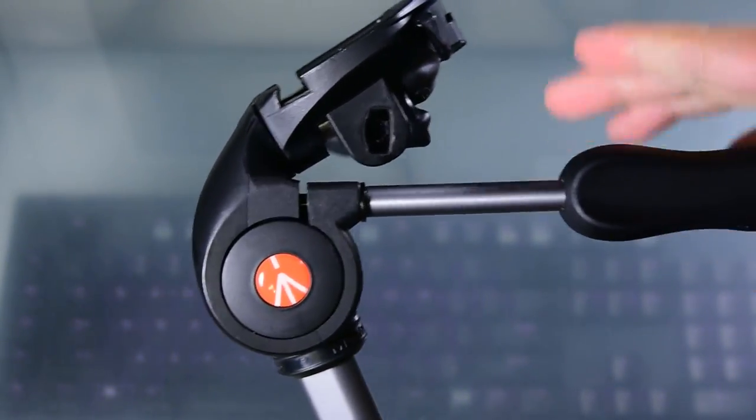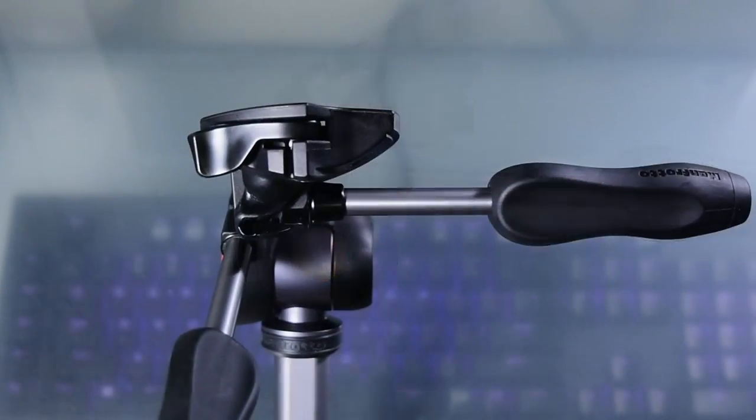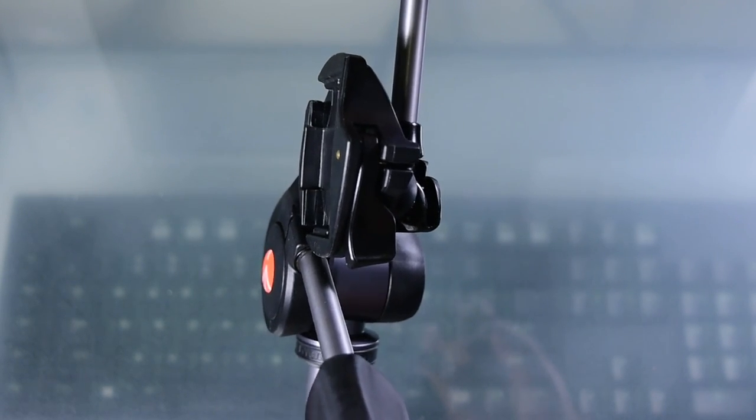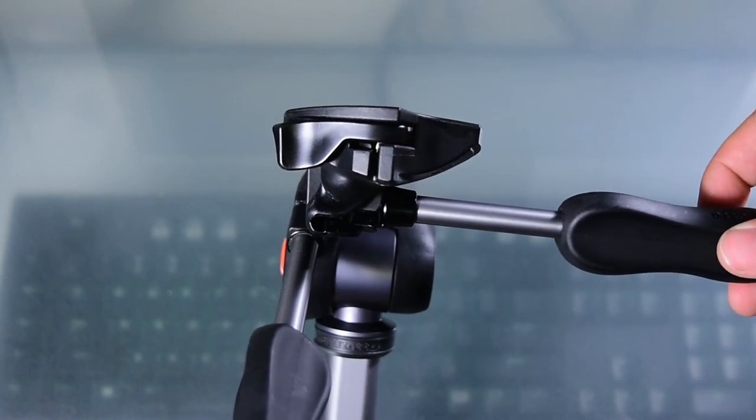The handle on the top allows you to tilt the camera to make sure your shot is level. You can even tilt it far enough to take portrait shots. Once you find your ideal position, just twist the handle.